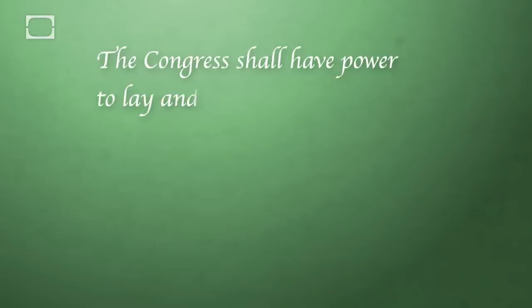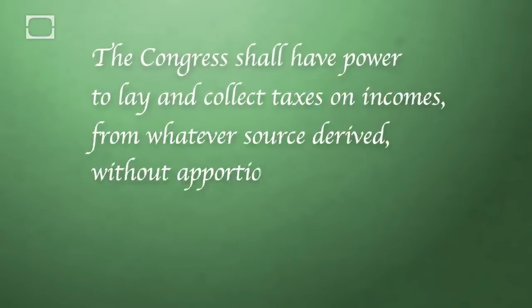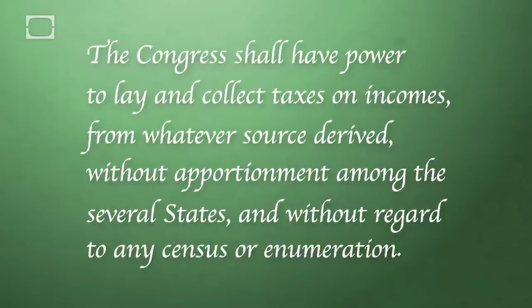A better word would be Byzantine, which I looked up earlier. In 1913 Congress passed the 16th amendment and the 16th amendment says this specifically. The Congress shall have power to lay and collect taxes on incomes from whatever source derived, without apportionment among the several states, and without regard to any census or enumeration.